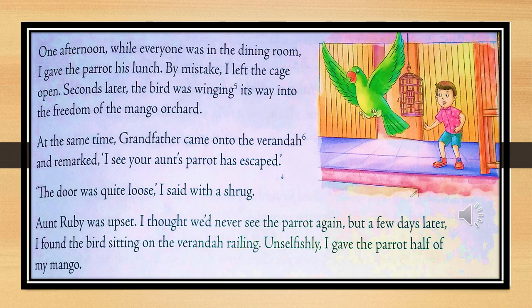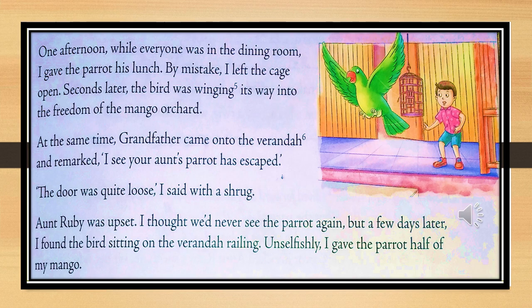One afternoon, when everyone was having lunch in the dining room, the narrator — the little boy telling the story — gave the parrot his lunch, as grandmother had appointed him for this task. But by mistake, he left the cage open. Immediately, the bird made its way and flew into the mango orchard. At the same moment, grandfather came into the veranda and saw it, and told him, 'I have seen that your aunt's parrot has escaped.' The narrator immediately said the door was quite loose, to suggest it was not entirely his fault.